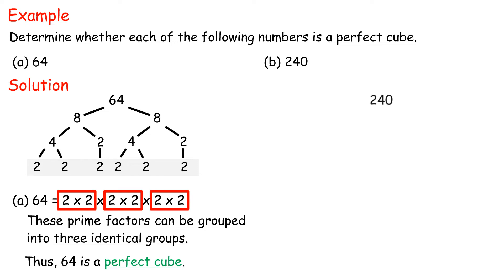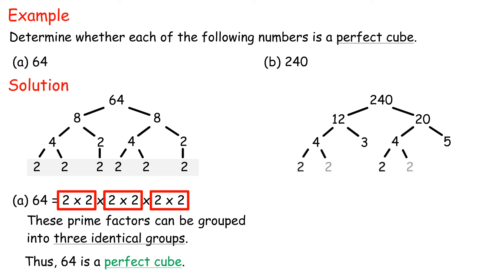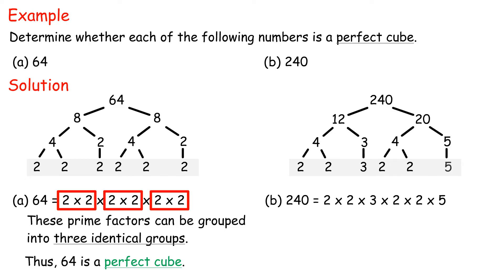B: 240 can be divided by 12 and 20. 12 can be divided by 4 and 3, and 20 can be divided by 4 and 5. 4 can be further divided by 2 and 2. So 240 equals 2 times 2 times 3 times 2 times 2 times 5. Since these prime factors cannot be grouped into three identical groups, 240 is not a perfect cube.